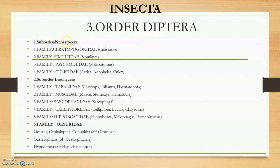In suborder Nematocera we have four families. Family Ceratopogonidae — genus Culicoides, very important in bluetongue transmission. Second family is Simuliidae — Simulium species. Third family is Psychodidae — genus Phlebotomus. Fourth family is Culicidae — genera Anopheles and Culex, the very famous mosquitoes.